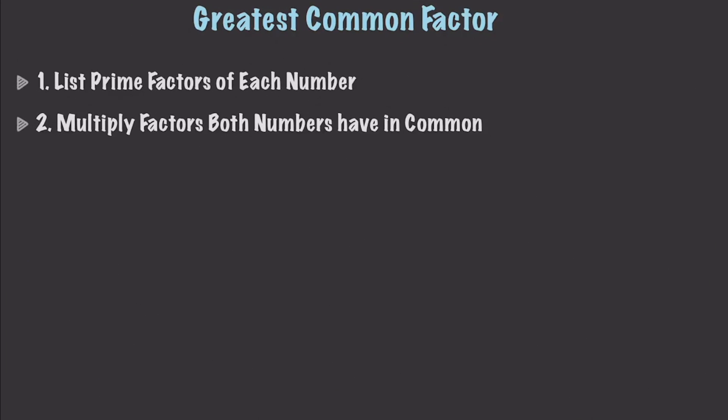Now let's talk about the greatest common factor. The greatest common factor is the value that divides two numbers. How we find it is we list the prime factors of each number and then multiply those factors that both have in common. Let's use examples — we'll find the greatest common factor of 24 and 36.